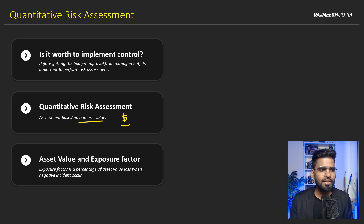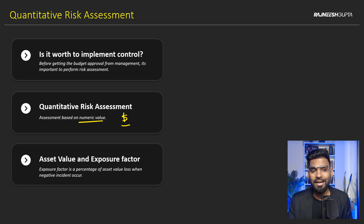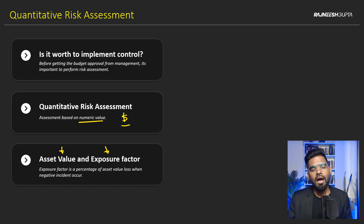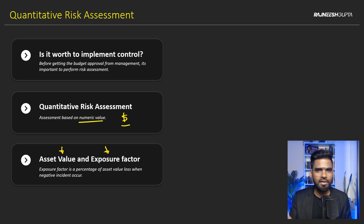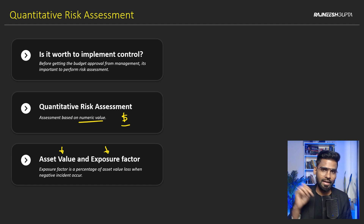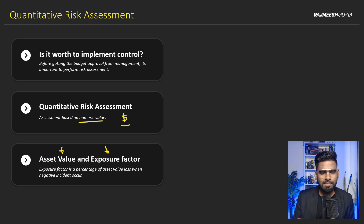There are some maths used throughout this session, so be ready for it. There are two things we need to remember in order to calculate risk. The first is the Asset Value, and the second is the Exposure Factor. The Asset Value is the amount of value generated by any asset — it could be $10,000 or $20,000 per day. So asset value is the amount of value generated by any asset per day.